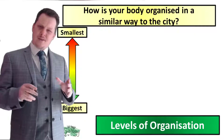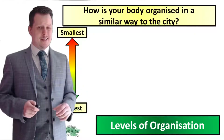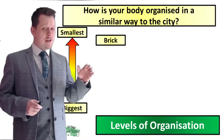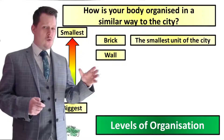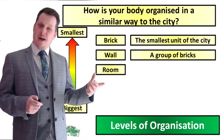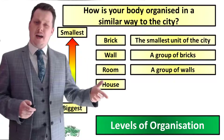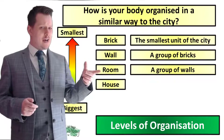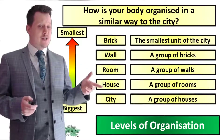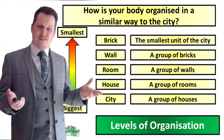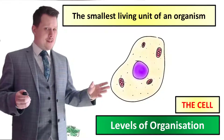Your body is organised in a very similar way to the city. In a city you have the brick which is the smallest unit of the city, you have the wall which is a collection of bricks, you have a room which is a collection of walls, you have a house which is a collection of rooms, and you have a city which is a collection of houses. The smallest living unit of an organism is the cell.